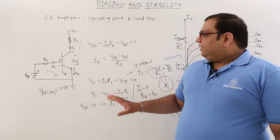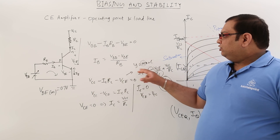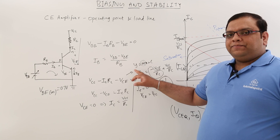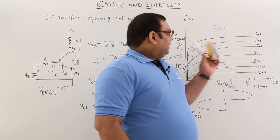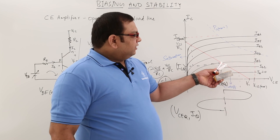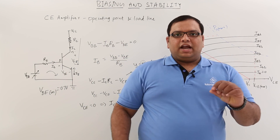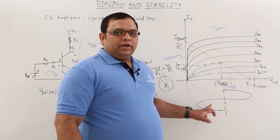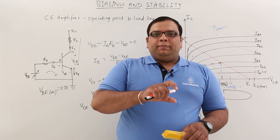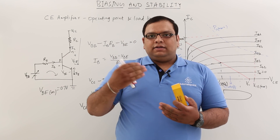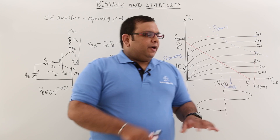In summary, the load line is obtained from the output characteristics using the output equation written in y = mx + c form. By setting IC = 0 and VCE = 0 separately, we get two points; connecting them gives the load line. The midpoint of the load line is taken as the operating point. Operating the transistor at this Q-point gives maximum swing at the output without distortion, which is the purpose of amplification — increased voltage and current gain without distorting the waveform.